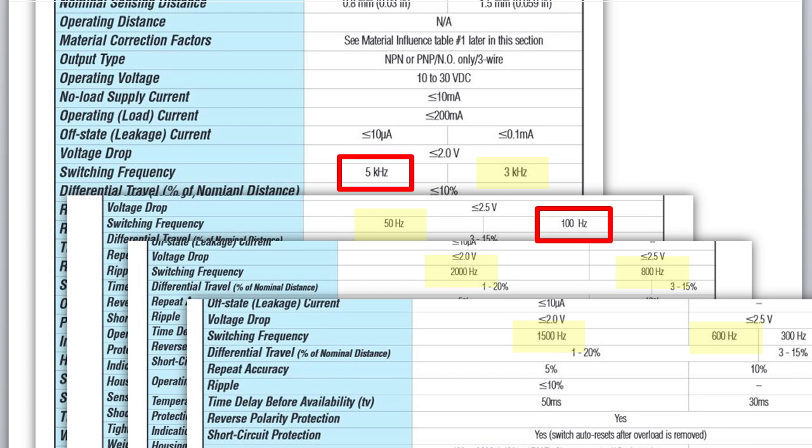So be sure that the switching frequency of the sensor is high enough to capture the objects you want to measure. I like for my switching frequency to be at least twice the rate of the objects I am trying to detect.